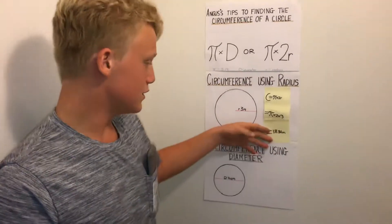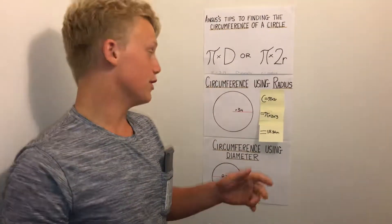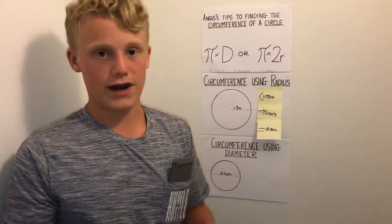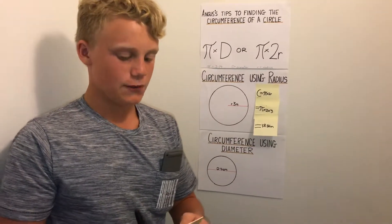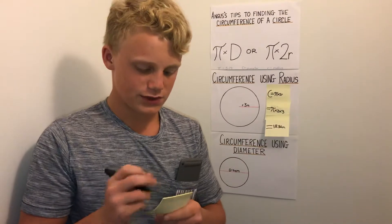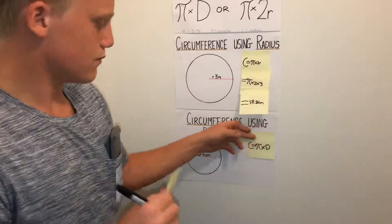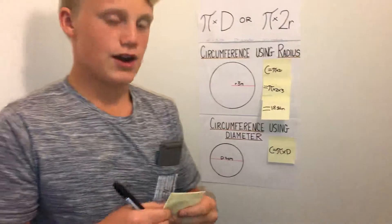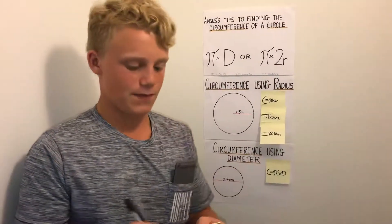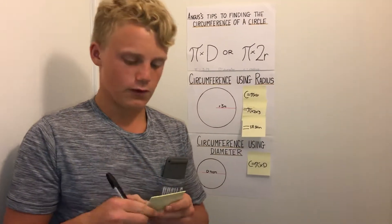Now let's move on to using diameter. Using diameter is similar to using radius except we don't have to double the radius. The formula is circumference equals pi times diameter. Again, we substitute the circle's diameter into our equation, which would equal pi times 4.